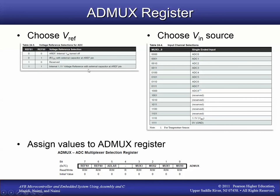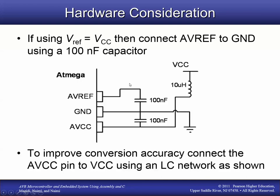If we're going to use either AVCC or the internal 1.1V for VREF, we need to connect the AVREF pin to ground with a 100 nanofarad capacitor to improve conversion accuracy. Another way to improve accuracy is to power the analog-to-digital converter by connecting it to VCC using an LC network — a 10 microhenry inductor and a 100 nanofarad capacitor. These are two hardware connections necessary for best results from the ADC.